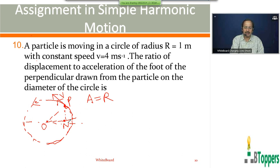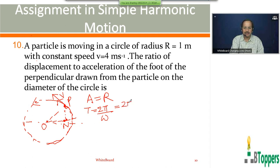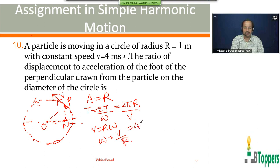The angular frequency of oscillations for the point N performing SHM along the diameter is the same as the angular speed of revolution of the particle moving in the circular path. The time period of revolution can be written as 2πR/V. We can write V equal to R·omega, or omega equal to V/R. With V equal to 4 m/s and R equal to 1 meter, omega equals 4 per second.